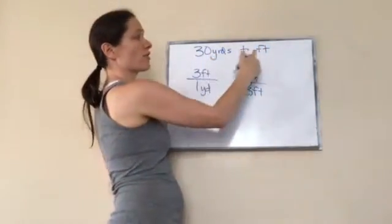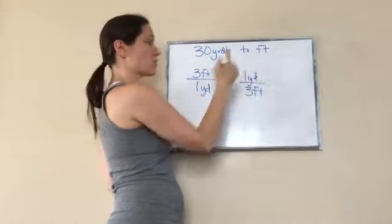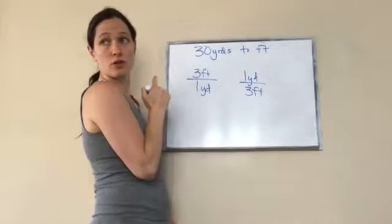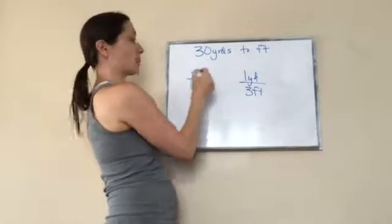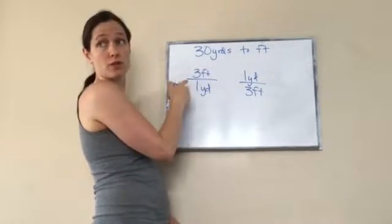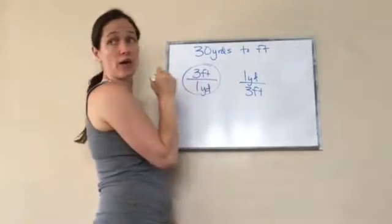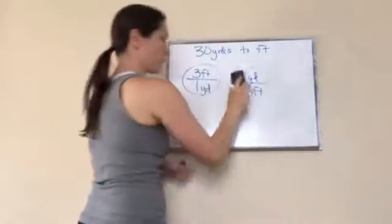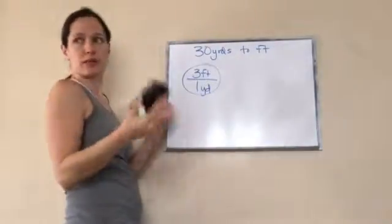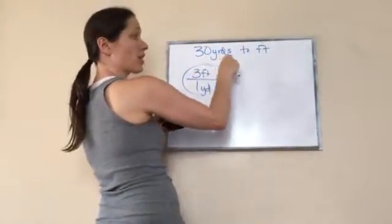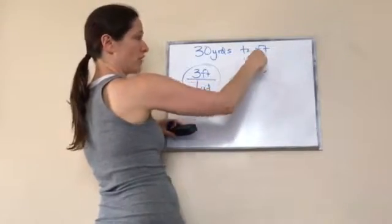So if I'm wanting to convert it to feet, which one of these am I going to use? Three feet. Which one's on top? This one? Feet. Very good. So this is the one I'm going to use, right? So I can erase this one. That just helped me to develop it. So now I'm going to take 30 yards and I'm going to convert it to feet.